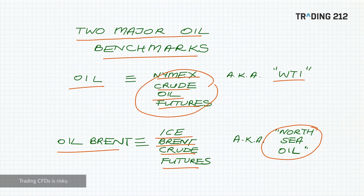Now both in a general sense represent the price of oil, but these geographical differences in delivery points have an impact on the pricing of each. For example, refining activity around Cushing, Oklahoma will have a bigger impact on WTI. Oil surpluses or shortages in the Middle East may tend to impact Brent more, as it's easier to ship oil from the North Sea to the Middle East than from the American heartland.